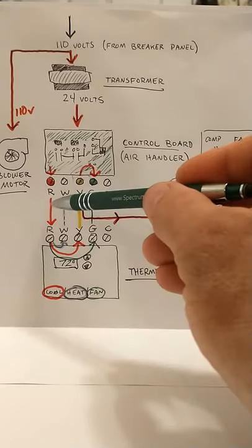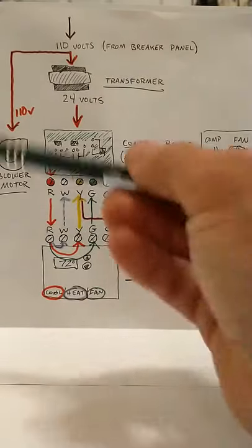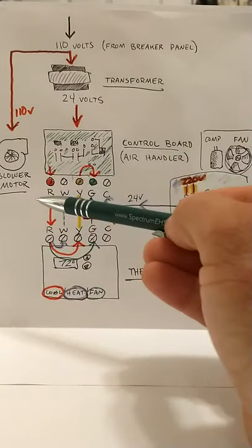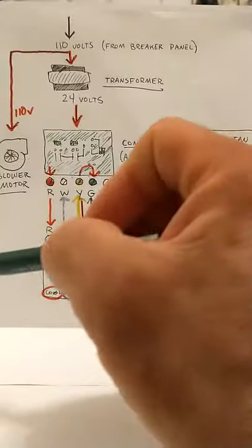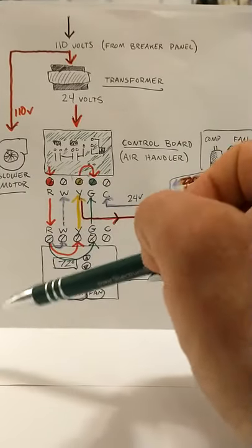You can also wire it to your 24 volt wire. So, for example, you would take your two wires from your float switch. One end would go to the R at your air handler. The other end would go to a red wire up to your thermostat. And if that float switch lifted...